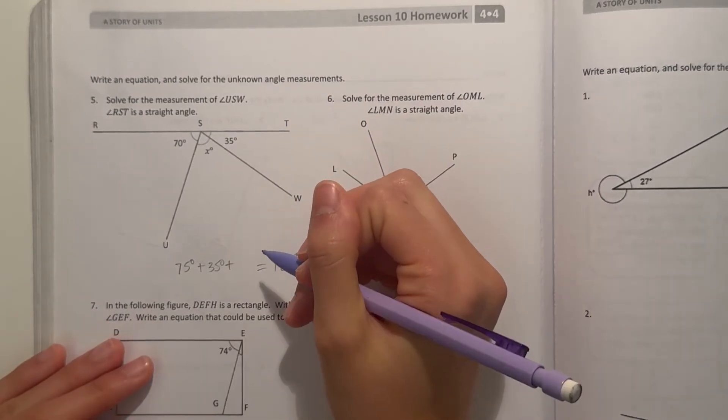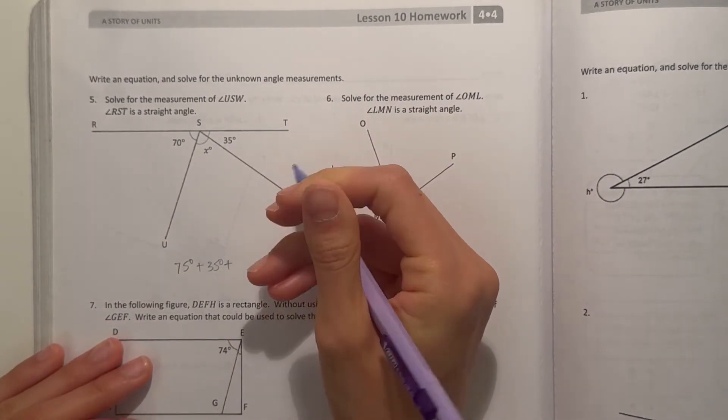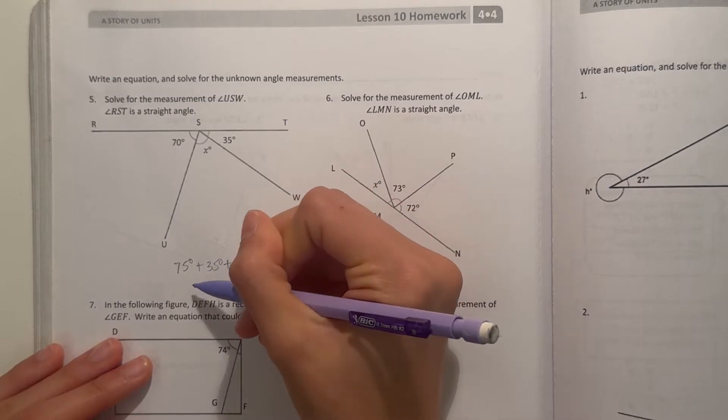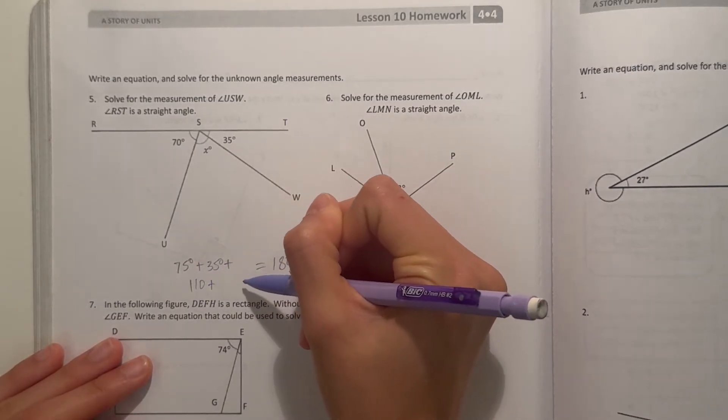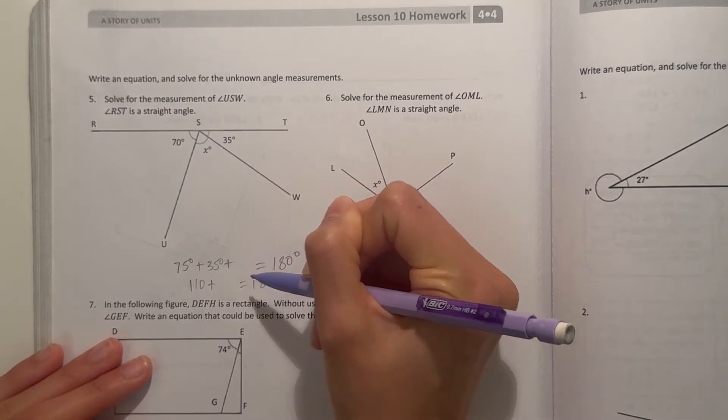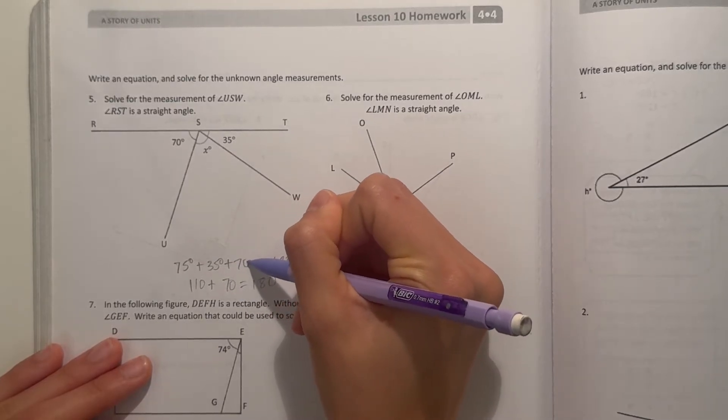So 70 plus 35 is 110. So 110 plus something equals 180, and that would be 70.